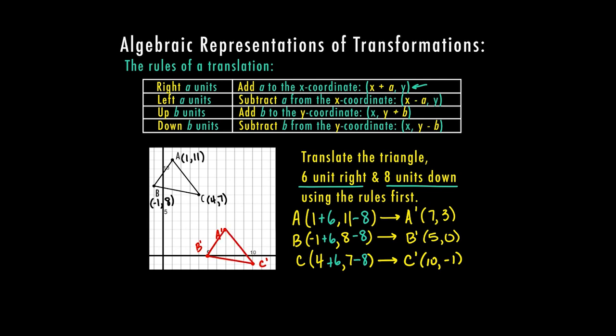The shape hasn't changed — it looks like the same shape. I'll verify by counting from A: going right 6, then down 8, and I land correctly on A prime. So there are two ways to do this: you can count and move all your points, or you can use the rules of translations — adding or subtracting from x for right/left, and from y for up/down.